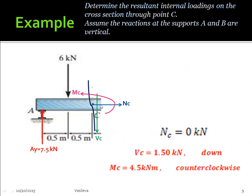Once again, these are the three internal loadings that I just solved for. NC was zero. VC was 1.5. And MC was 4.5. It's important to always account for your final direction, whether it's pointing left, right, up, down, clockwise, or counterclockwise.